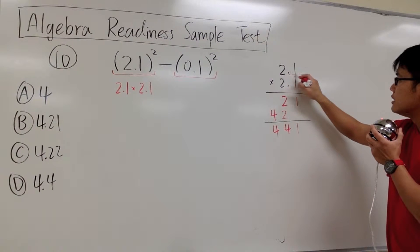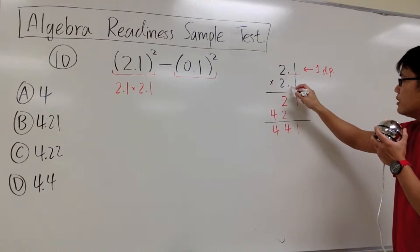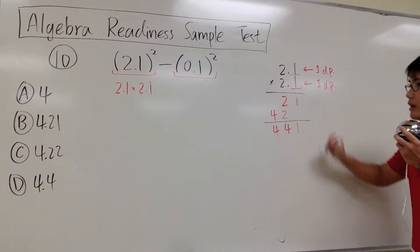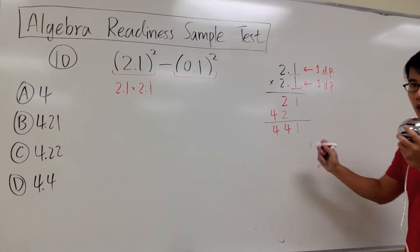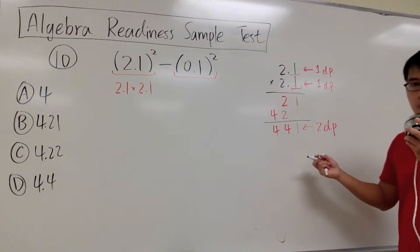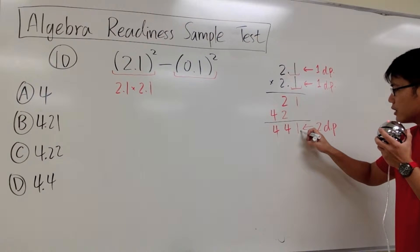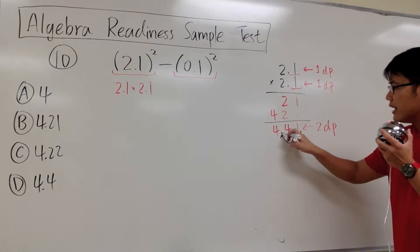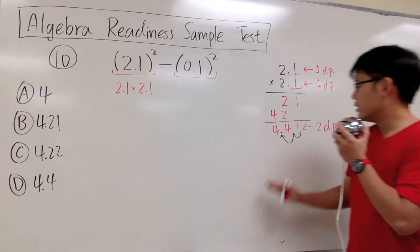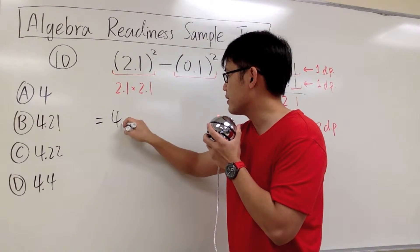The 2.1 has 1 decimal place, and the 2.1 right here also has 1 decimal place. Therefore, for the final result, we need a total of 1 plus 1 — 2 decimal places. So we start all the way to the right and count once, twice to the left, and locate the decimal point right here. So 2.1 times 2.1 is going to be 4.41. That's the first part — I'm already done right here: 4.41. And then we are just going to bring down the subtraction for now.